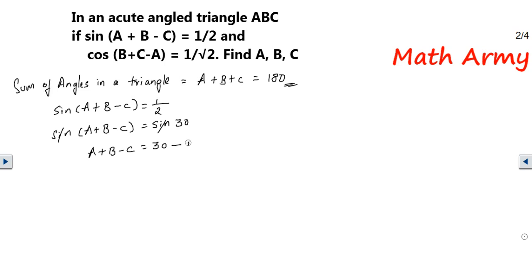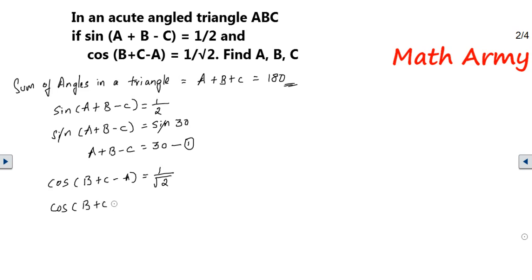Now the second piece of information given: cos(B+C-A) = 1/√2. What is the value of 1/√2 in terms of cosine? It's cos 45°. So instead of 1/√2, write cos 45°. Cosine on both sides gets cancelled, and you are left with B + C - A = 45°. This is going to be my equation number 2.